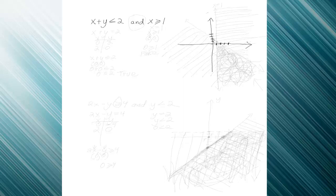Now, just like before, even though I have two of them here, I'm going to graph them like I did before. I'm going to graph the boundaries of each line first, and then I'm going to shade, but you're going to see an interesting thing happen. I'm going to change x plus y is less than or equal to 2 to x plus y equals 2, and I'm going to graph this.